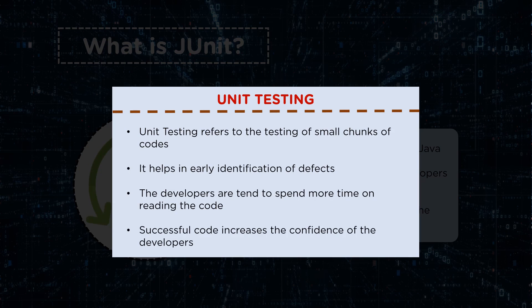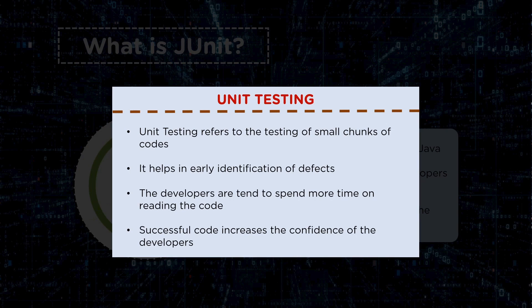Unit testing refers to the testing of small modules or small pieces of code. It is basically used for the early identification of defects and bugs, because you cannot simply rely on the QA team to perform testing and then provide feedback. With the help of this unit testing framework, we can immediately get feedback right away once we run the test cases. This helps developers fix bugs with easy and fast feedback.